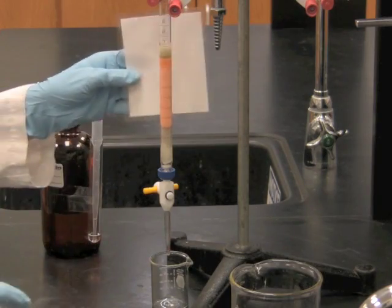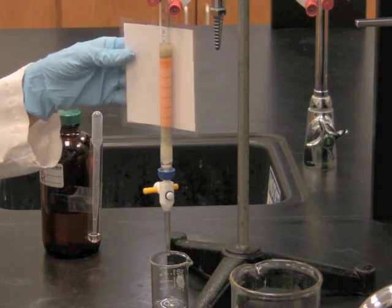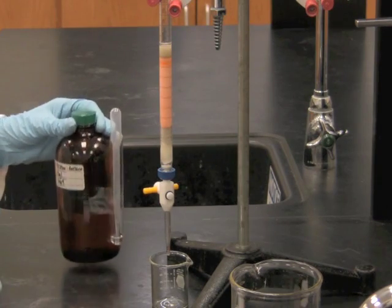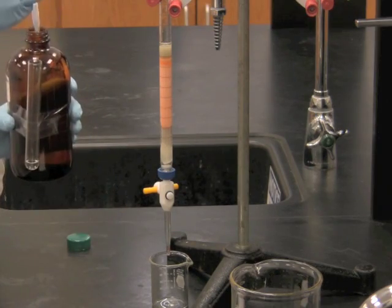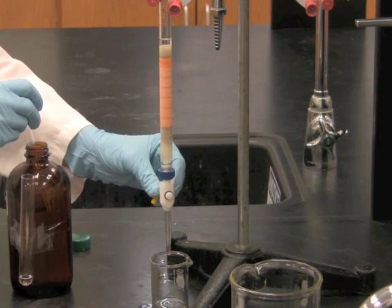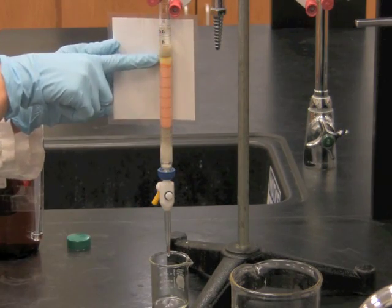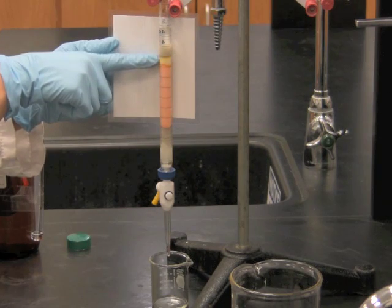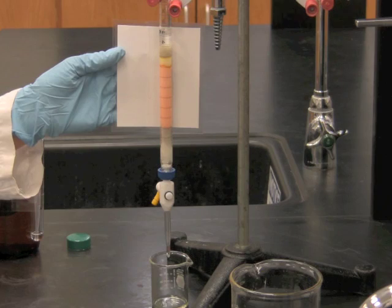We're going to switch solvents and we're going to elute the lycopene band from the column using a 9 to 1 mixture of petroleum ether and acetone. You should be able to see that as the solvent front is moving down the column that the lycopene is starting to come off and come down with the solvent.